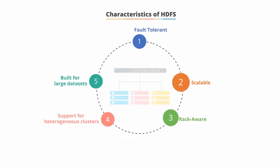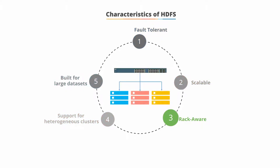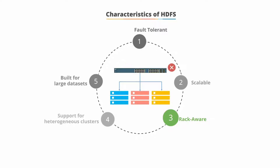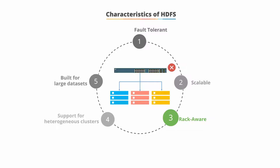Three is rack awareness. A rack is a collection of machines, typically around 40 to 50, which are connected using the same network switch. If that entire network goes down, then all machines in that rack will be out of service. Rack awareness is a concept introduced by Apache Hadoop to overcome this issue.